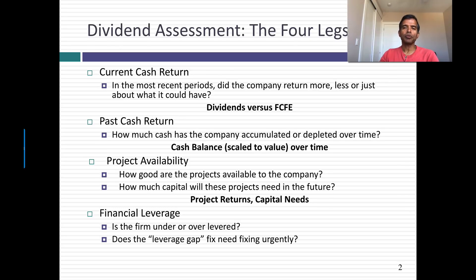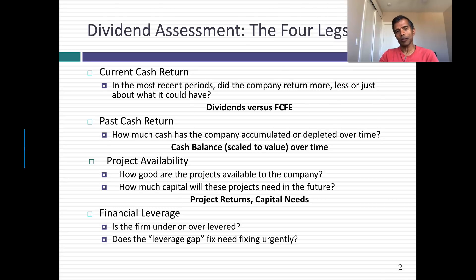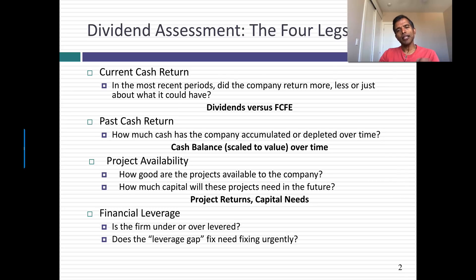Third, take a look at the projects the company has — not just the quality of the projects measured in terms of whether they're earning more than the cost of capital, but also the quantity. Does this company have a lot of projects or not that many? And finally, look at whether your company is under-levered or over-levered. Does it have a debt ratio lower than its optimal or higher than its optimal?